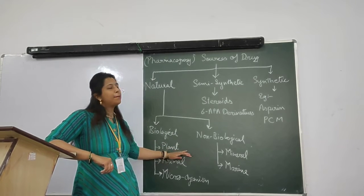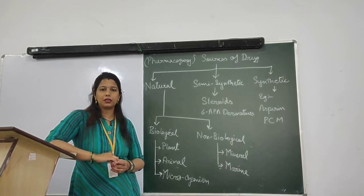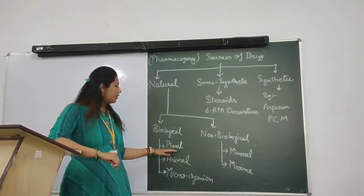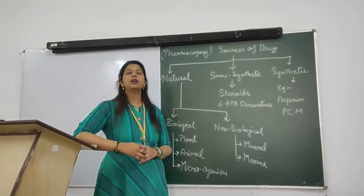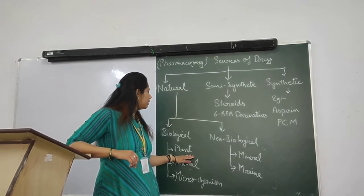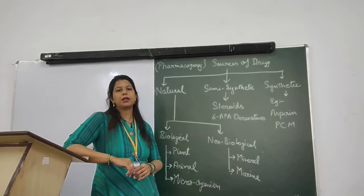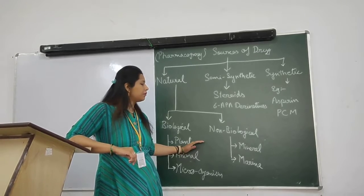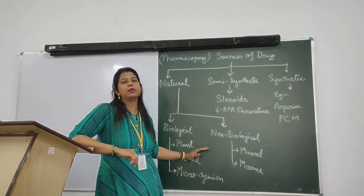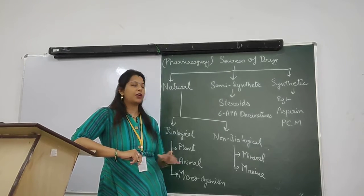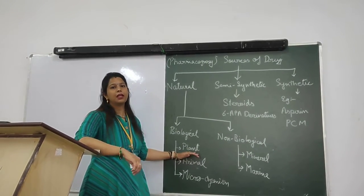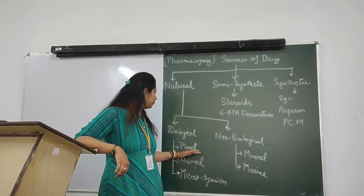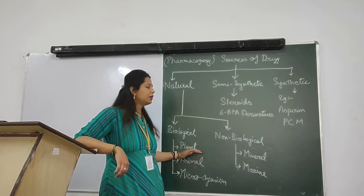Plants can be used as a whole part — that is, an entire plant can be used for medicines. For example, Ephedra and Datura are used as entire plants. Whereas sometimes individual parts of plants are used as medicine. For example, rhizomes — ginger and garlic are examples of rhizome-type plant parts.